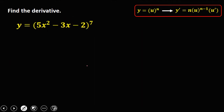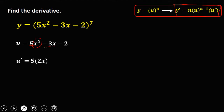For this given: y equals (5x squared minus 3x minus 2) to the power 7. Using the formula, u is 5x squared minus 3x minus 2. To get u prime: the derivative of 5x squared is 5 times 2x using the power rule; the derivative of negative 3x is negative 3; and the derivative of the constant is 0. So u prime equals 10x minus 3.